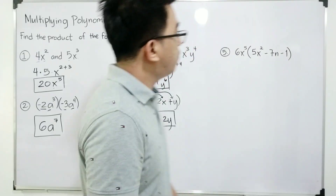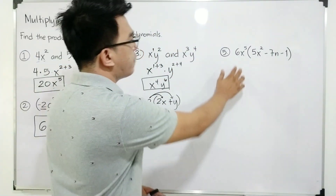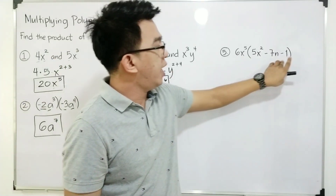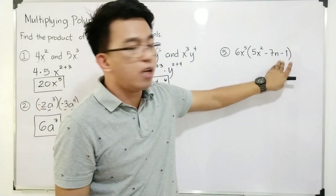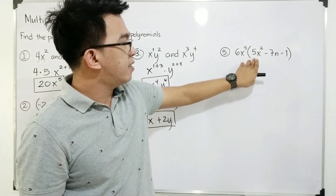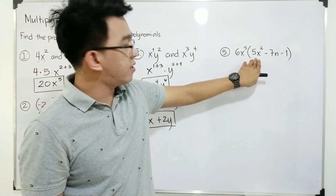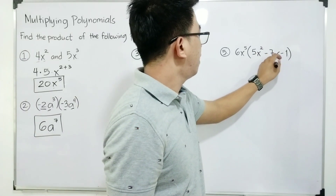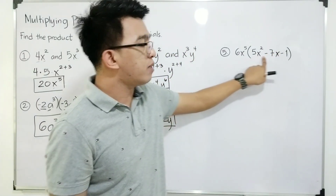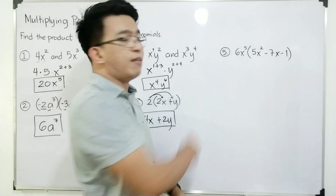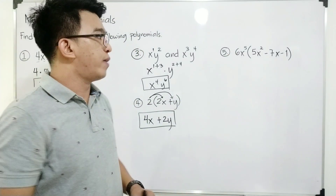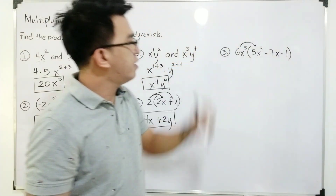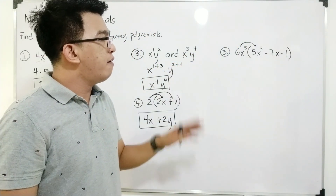Now let's move on with item number 5. For item number 5, we are given a monomial which is 6x to the 5th power. And the other polynomial is a trinomial: 5x squared minus 7x minus 1. Since we have three terms in the trinomial, we will multiply 6x raised to the 5th power three times. Multiplying 6x to the 5th power by 5x squared: multiply 6 and 5, and for the exponent, copy your variable x and add 5 plus 2.